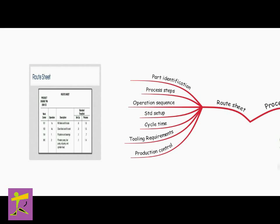The route sheet usually provides the following information: (1) part identification numbers and names, (2) description of the processing steps in each operation, (3) operation sequence and machines, (4) standard setup and cycle times, (5) tooling requirements for each operation, and (6) production control information showing the planning lead time at each operation.